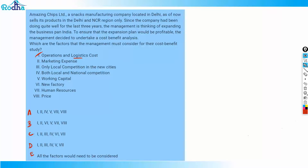Let's analyze it one by one. Statement 1 — operations and logistics cost: since production needs to increase and goods are being transported across the country, both operations and logistics costs are very important — include this. Statement 2 — marketing expense: they need to create awareness about the product among the public, so they need to incur additional marketing costs — include this. For Statements 3 and 4, Statement 4 (both local and national competition) is the better choice because the company is expanding pan-India, so they need to consider both local competitors in each city and national competitors.